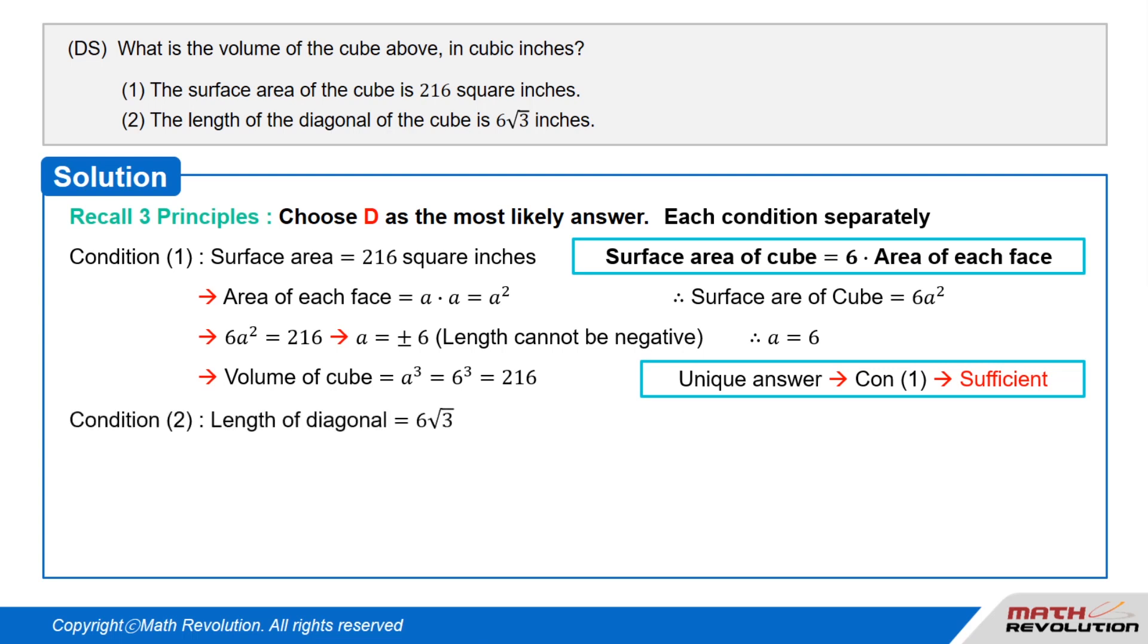Condition 2 tells us that the length of the diagonal is 6 times square root of 3 inches. As the length of a diagonal of a cube is square root of A squared plus A squared plus A squared, adding like terms, we get square root of 3 times A squared. The square root of A squared equals A. So, it simplifies to A times square root of 3. Hence, the length of diagonal of cube equals A times square root of 3.